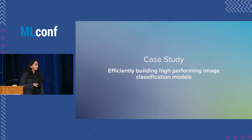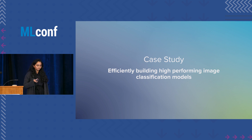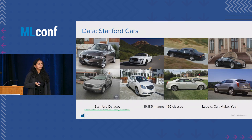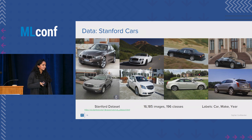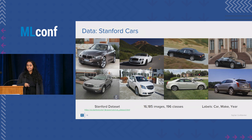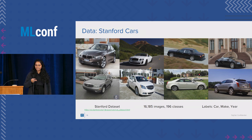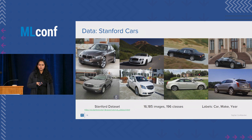Today we're focused on a case study on efficiently building high-performing image classification models. The data we'll be using is Stanford CARS — approximately 16,000 images and 196 classes, labeled by car make, model, and year. The complexity of this dataset comes from the small number of images, the high number of labels to classify, and the close proximity of labels in the label space.